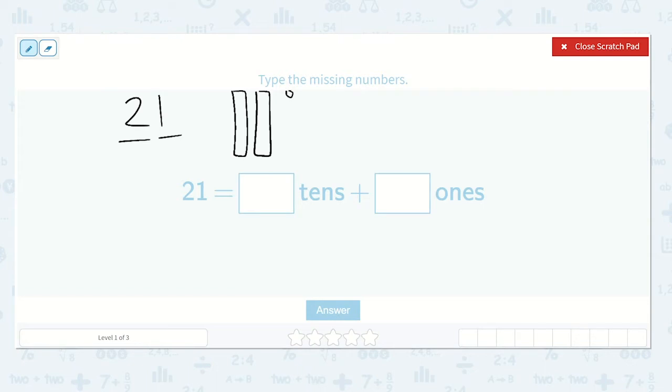And this makes sense because when we count by tens, 10, 20, then we just have one more, 21. So we have two tens and one one.